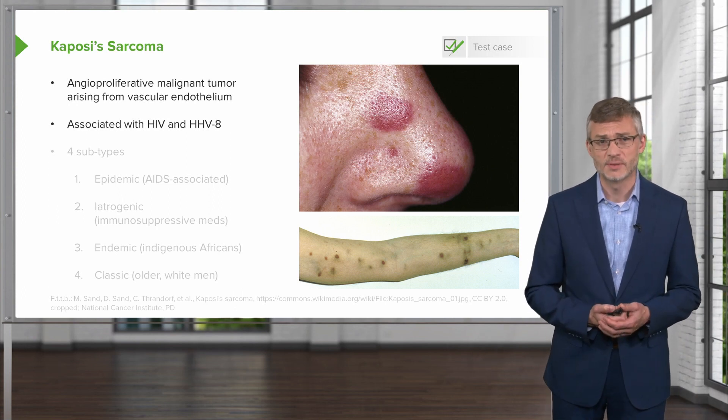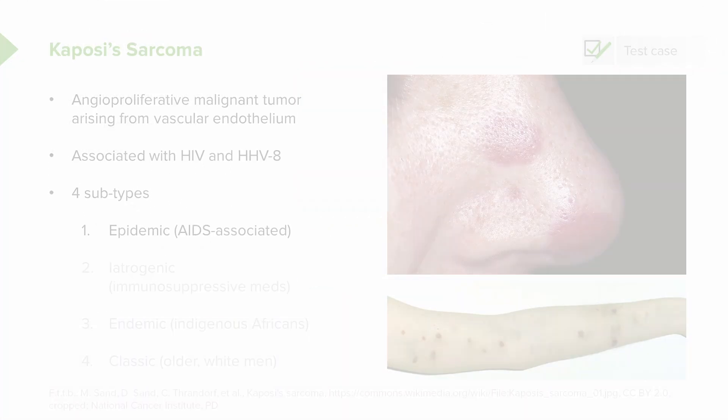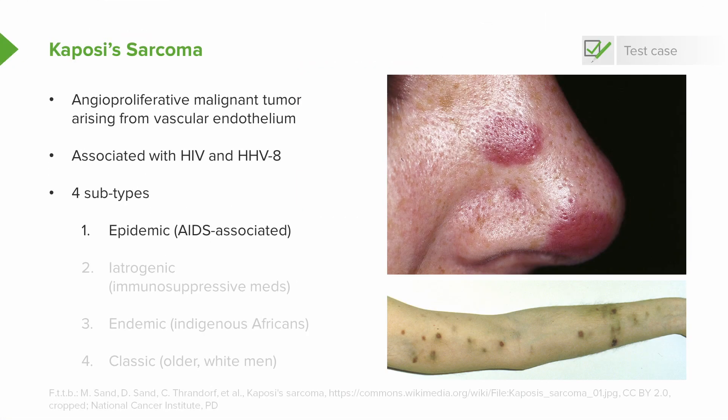There are actually four different subtypes that give rise to this condition. The first is the epidemic subtype, which is the AIDS-associated one we're very familiar with — one of the harbingers of HIV-AIDS during the AIDS epidemic in the United States in the 80s.